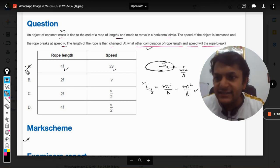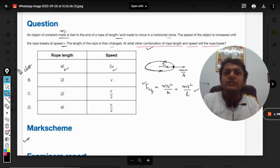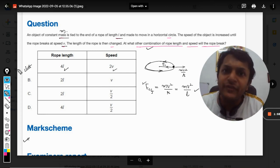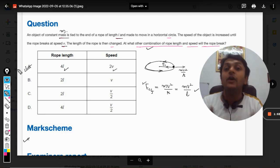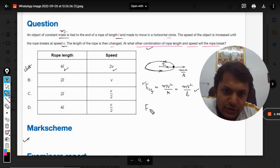So in case A, the same centrifugal force is acting which is equal to the breaking strength, and that is why the rope will break in the case of A also.